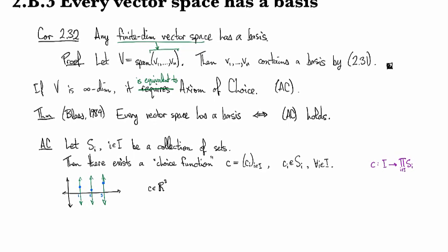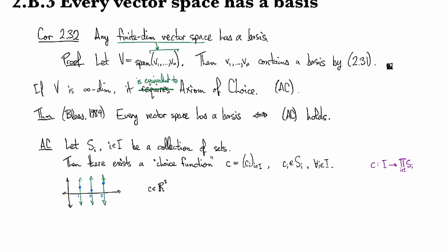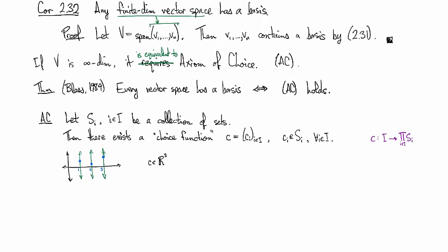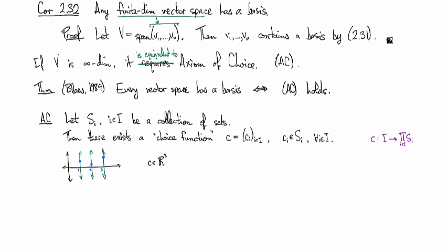This axiom of choice thing is fairly reasonable, definitely in the case when the index set is finite or even countable. It's when it gets uncountable and maybe when it's not even a linearly ordered set that it gets a little hairy.